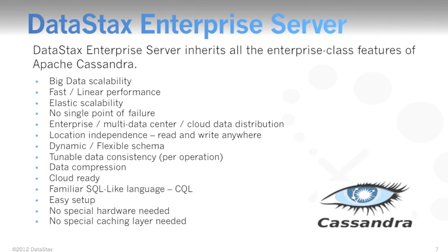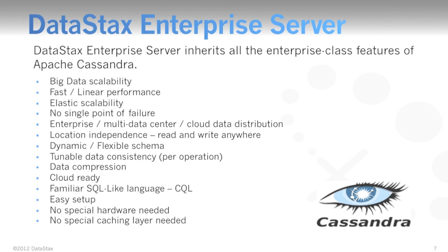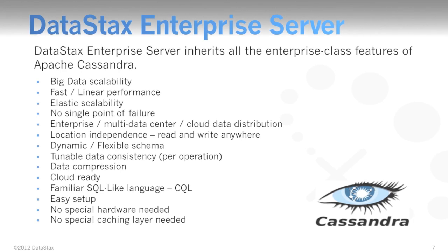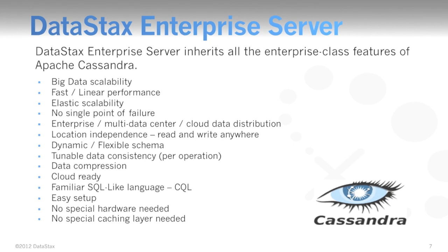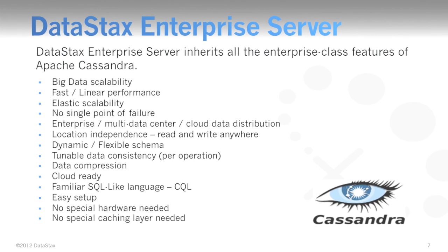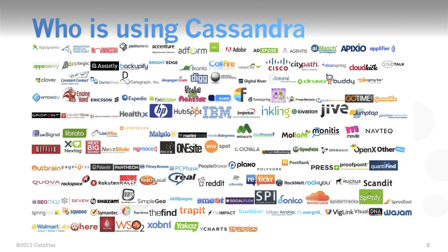DataStax Enterprise inherits all the enterprise-class features of Apache Cassandra. You get scalability for big data situations, fast linear scale performance, no single point of failure, easy-to-use replication that's both multi-data center and cloud capable, a distributed location-independent read-write-anywhere design, and a whole lot more. Because of these technical advantages, lots of modern businesses are using Cassandra to tackle their real-time big data needs.